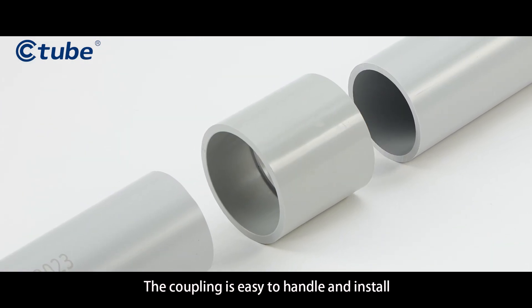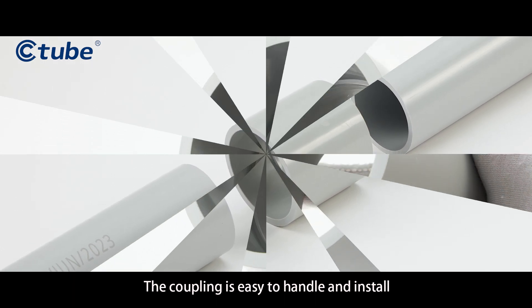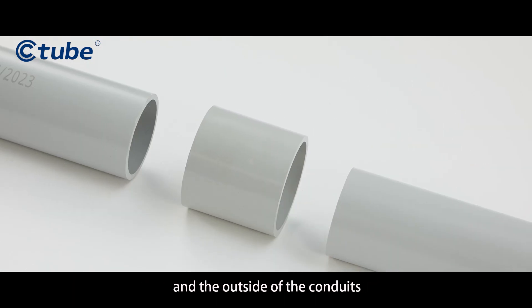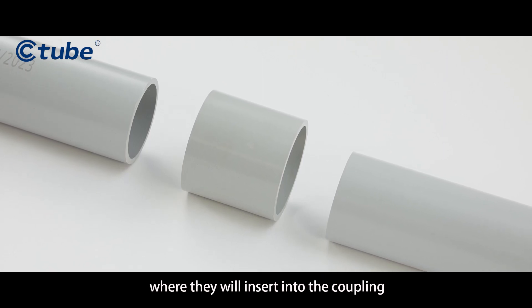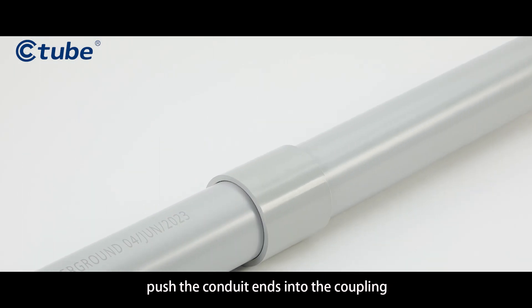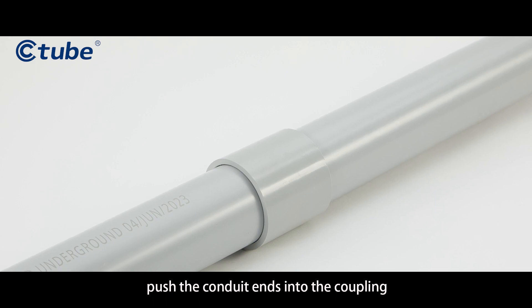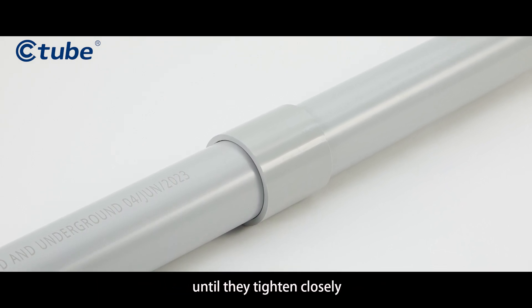The coupling is easy to handle and install. Apply the primer to the inside of the coupling and the outside of the conduits where they will insert into the coupling. Push the conduit ends into the coupling, holding them for some time until they tighten closely.